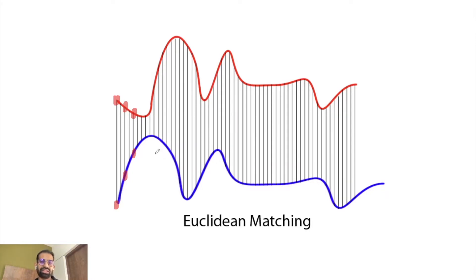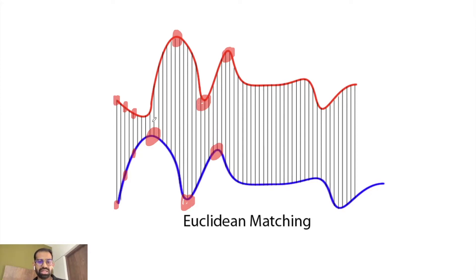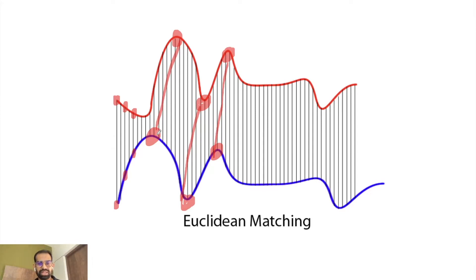But as in this example we can see, in the case of time series, they are not always aligned. We can clearly see that this hump is similar to this hump, this trough is similar to this trough, and this hump is also similar to this hump. In order to find similarity of patterns, we should be comparing distances between these corresponding points. But Euclidean matching doesn't give us that. So in order to align two time series, we will use an approach called dynamic time warping.